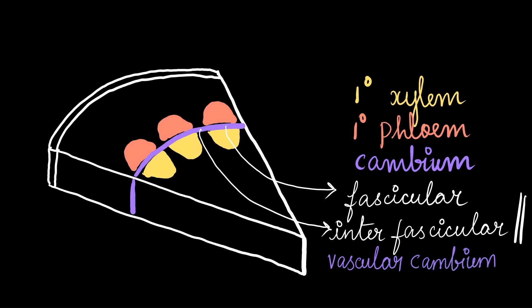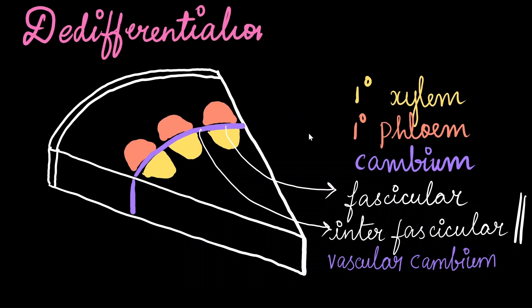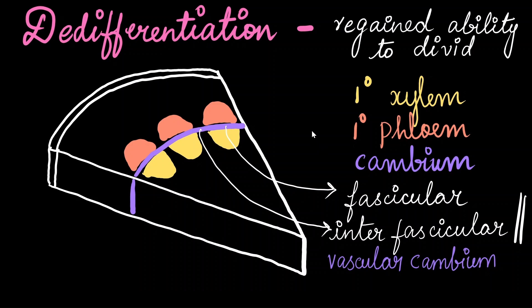Vascular cambium is formed when the parenchyma cells that are present in between the xylem and phloem regain the ability to divide. This is the process of de-differentiation.